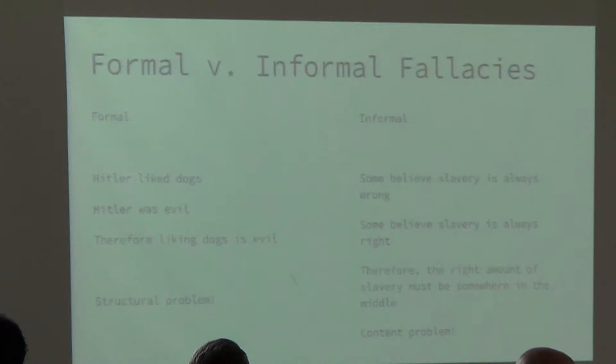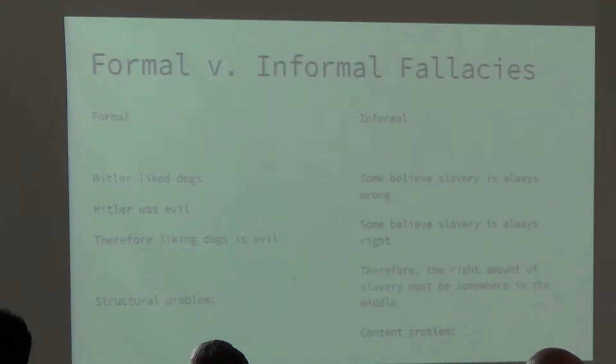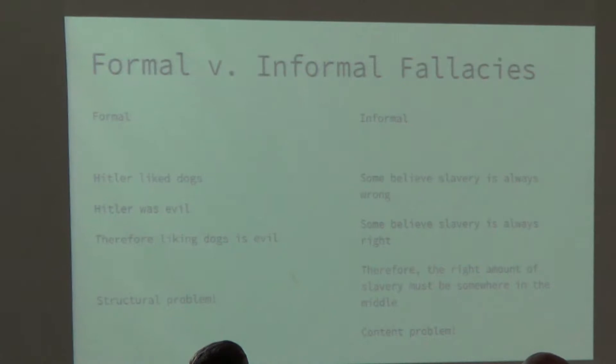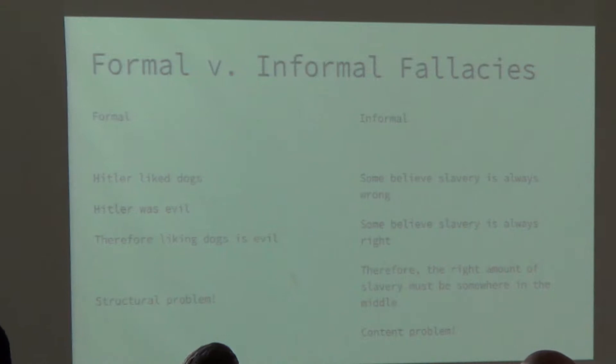An example of a formal fallacy: Hitler liked dogs; Hitler was evil; therefore, liking dogs is evil. There is no way to get from the premises to that conclusion — that is a structural problem. An example of an informal fallacy: some believe slavery is always wrong; some believe slavery is always right; therefore the right amount of slavery must be somewhere in the middle. That is a content problem — the premises fail to adequately support that conclusion.